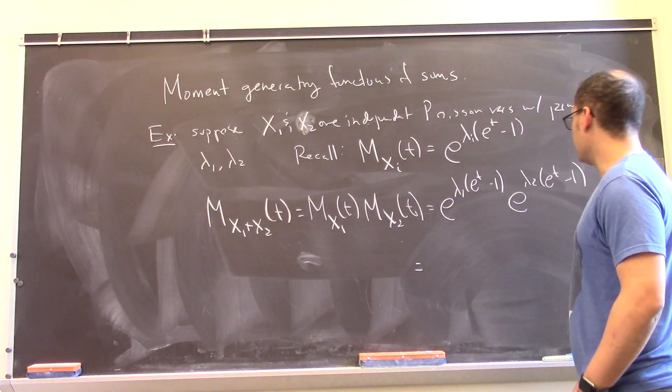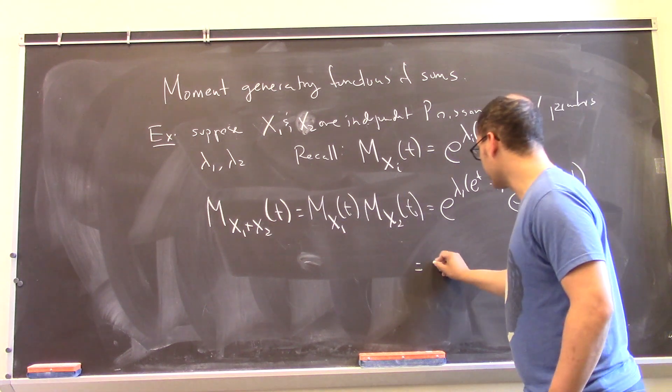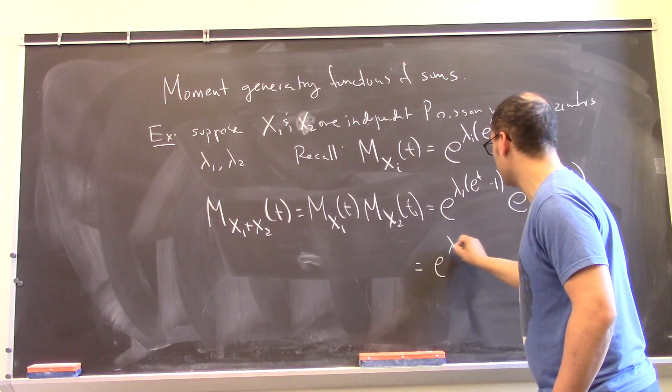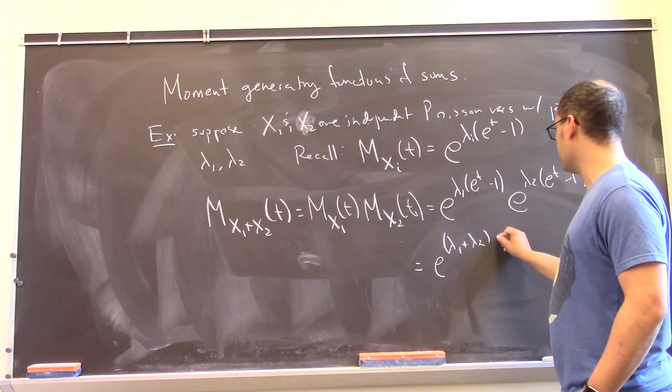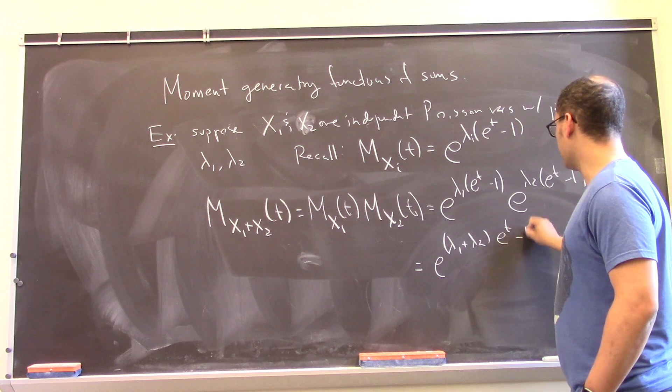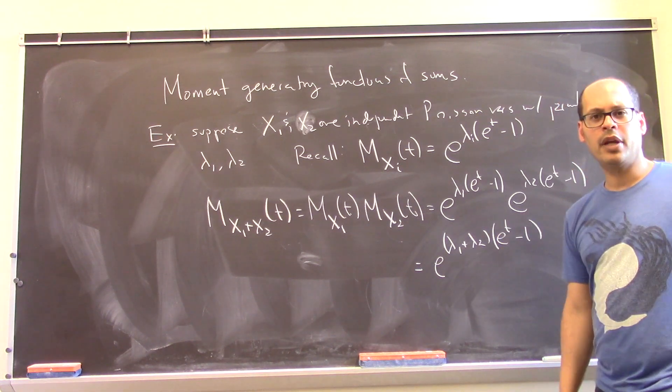And I can just combine those, of course. This is e to the sum of those things, which then you can see is lambda 1 plus lambda 2, e to the t minus 1.